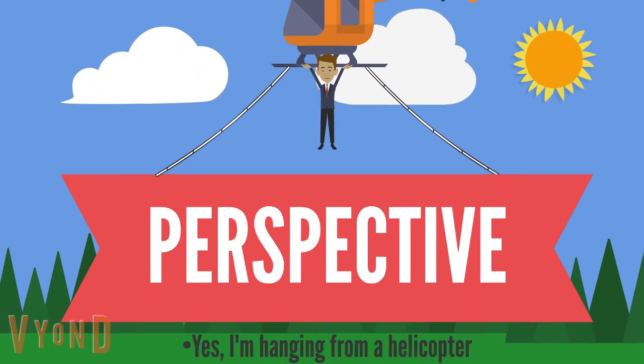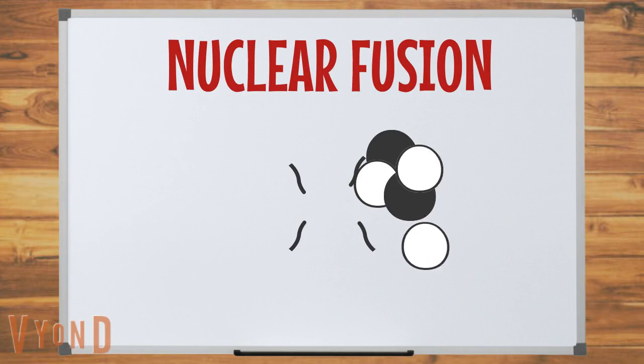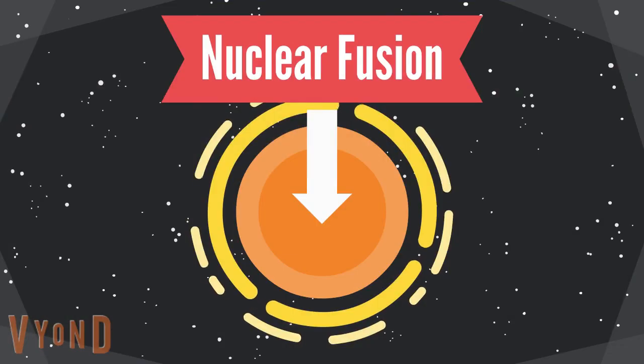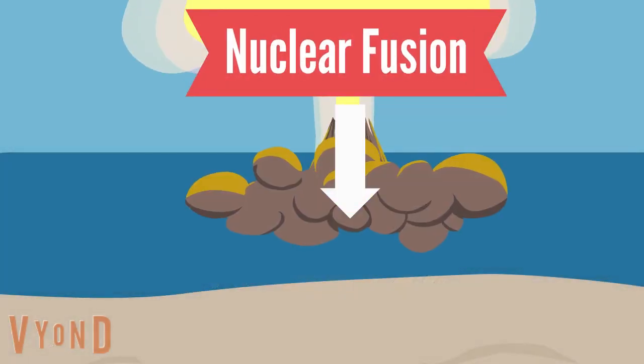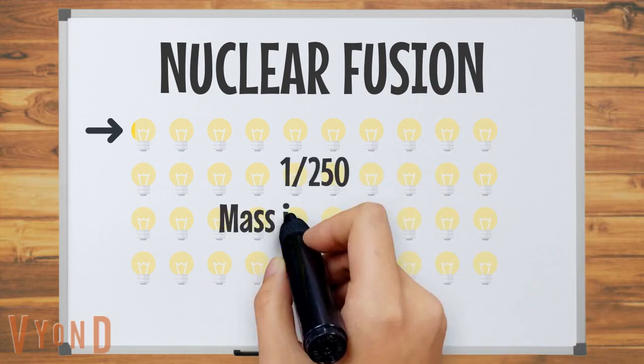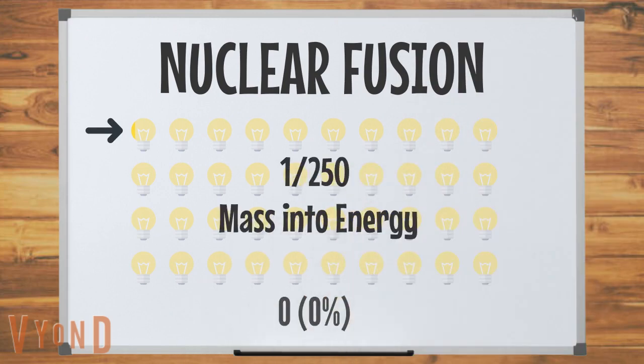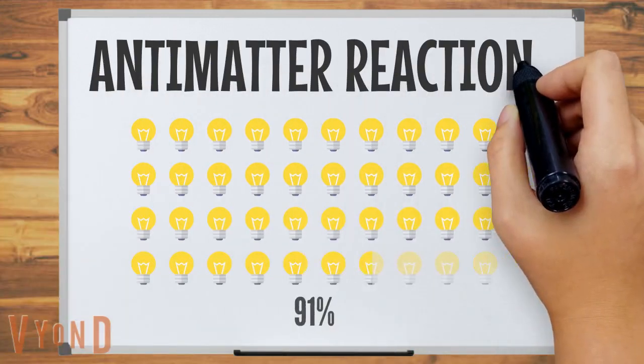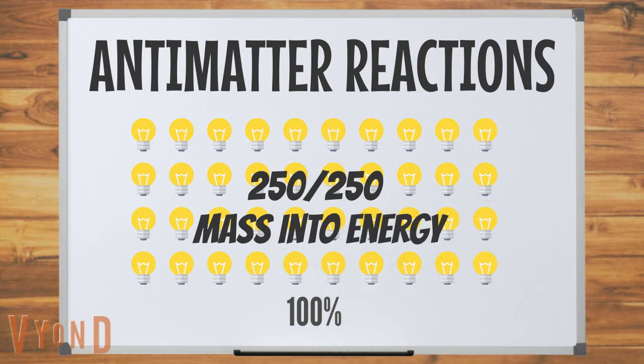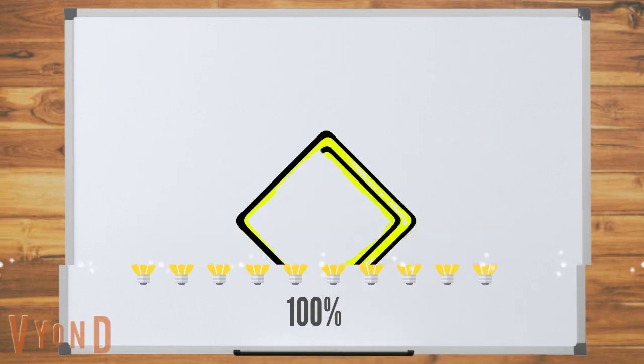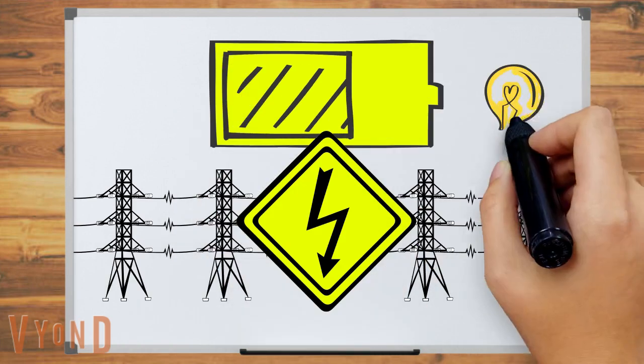Let me put that into perspective. Nuclear fusion, the process going on in stars and hydrogen bombs, converts less than 0.4% of mass into energy. Antimatter reactions convert 100% of mass into energy. That is absolutely, insanely powerful.